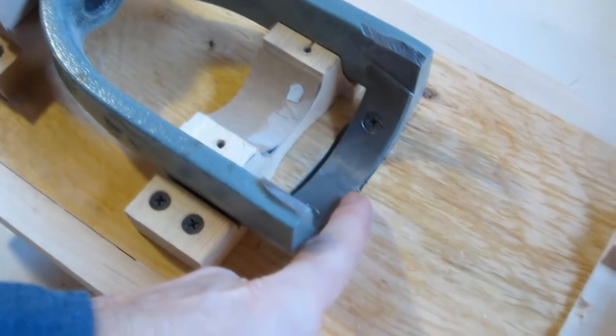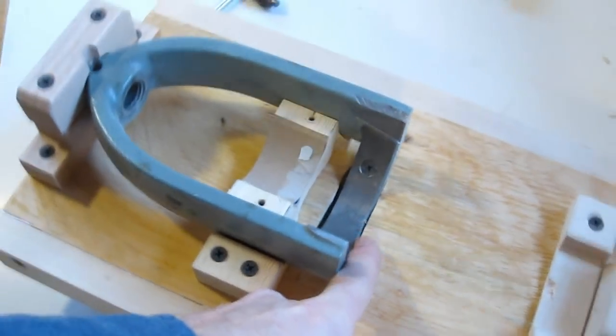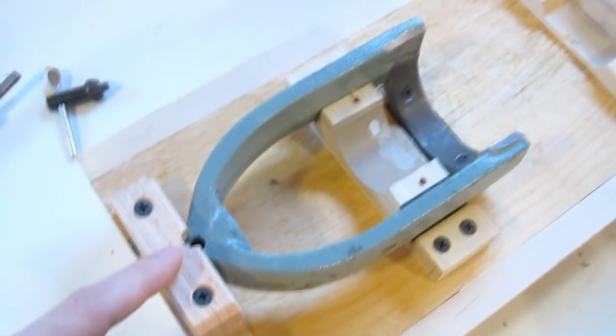And it actually sticks into the plywood a little bit here so that it can push up against the plywood because you need to apply an awful lot of force when you're hollow chisel mortising.